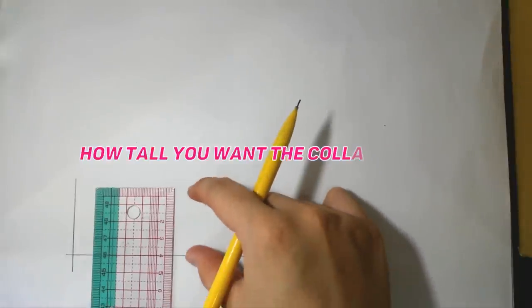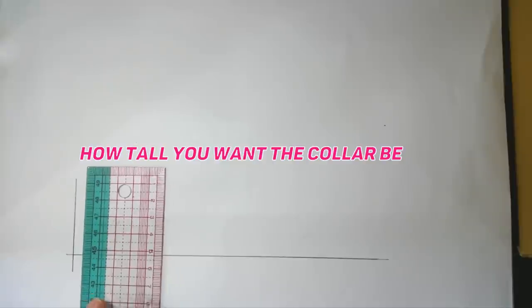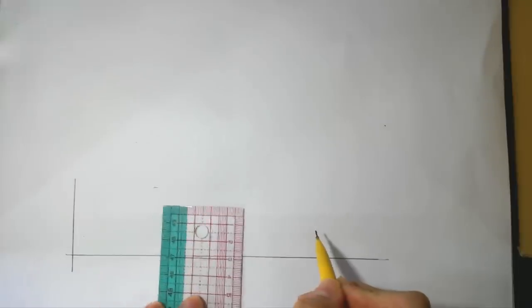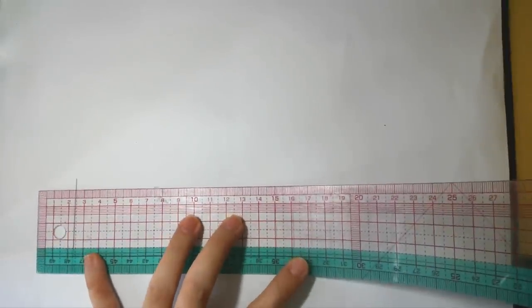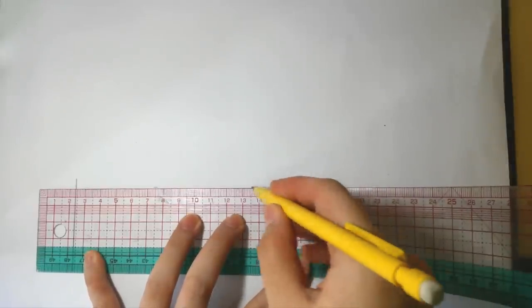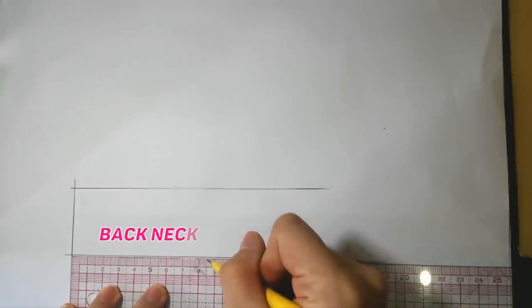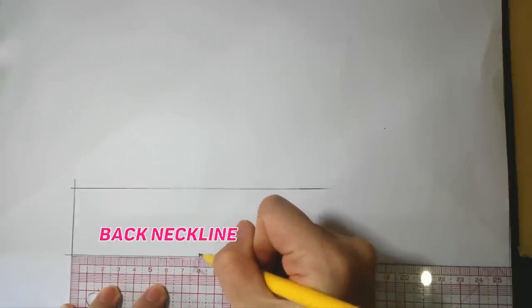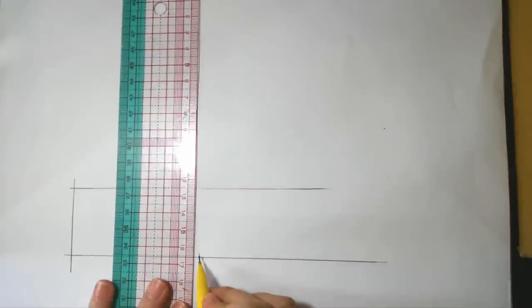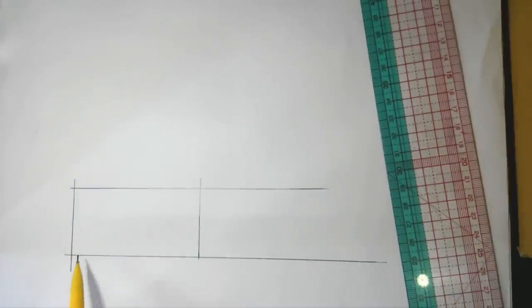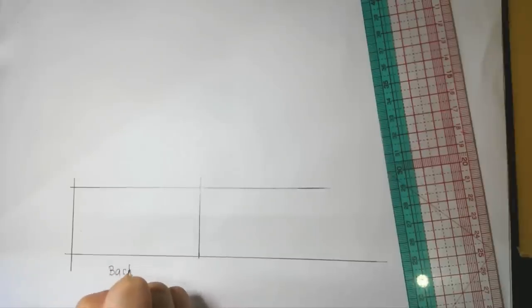Then determine how tall you want the collar to be. I would suggest around 3 to 5cm. This time I want to make it 4cm. Mark 4cm, then pull a line through. After that, mark based on half back neckline measurement - mine is 8cm. Draw a perpendicular line. This part of the collar will be sewn to the back neckline.